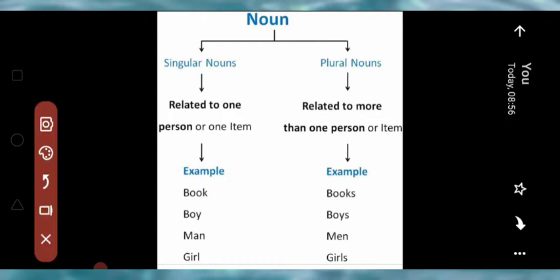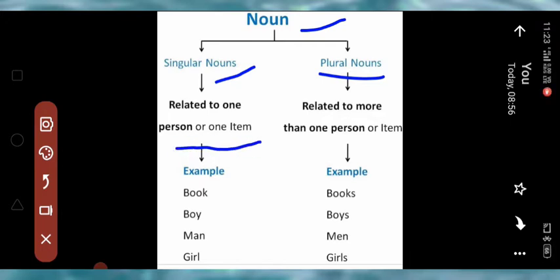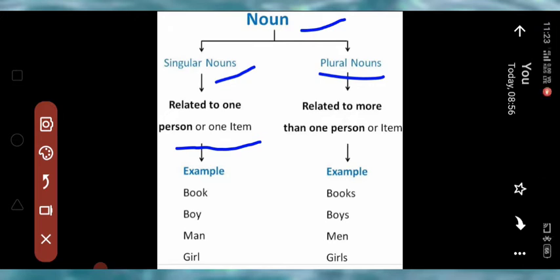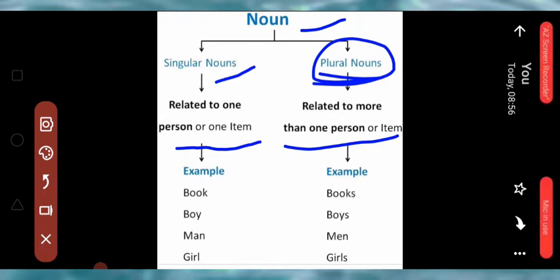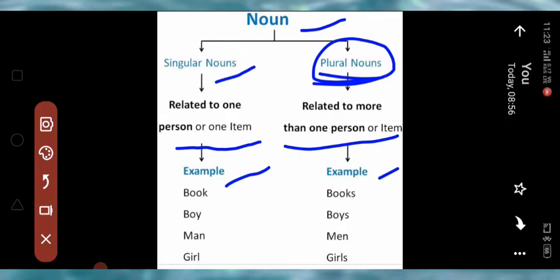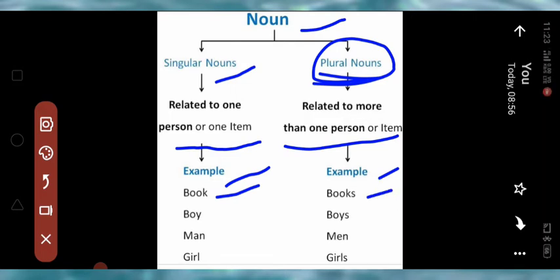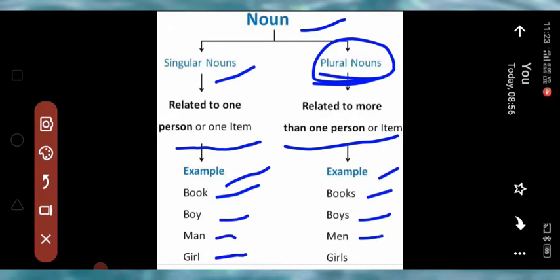Noun means sanghya. Singular nouns are ek vachan, plural nouns are bahu vachan. Singular nouns are related to one person or item — ek vachan sanghyan jo hoti hai woh kisi ek vyakti ya ek vastu se judi hoti hai. Plural nouns are related to more than one person or item. For example: singular — book, plural — books; boy, boys; man, men; girl, girls.